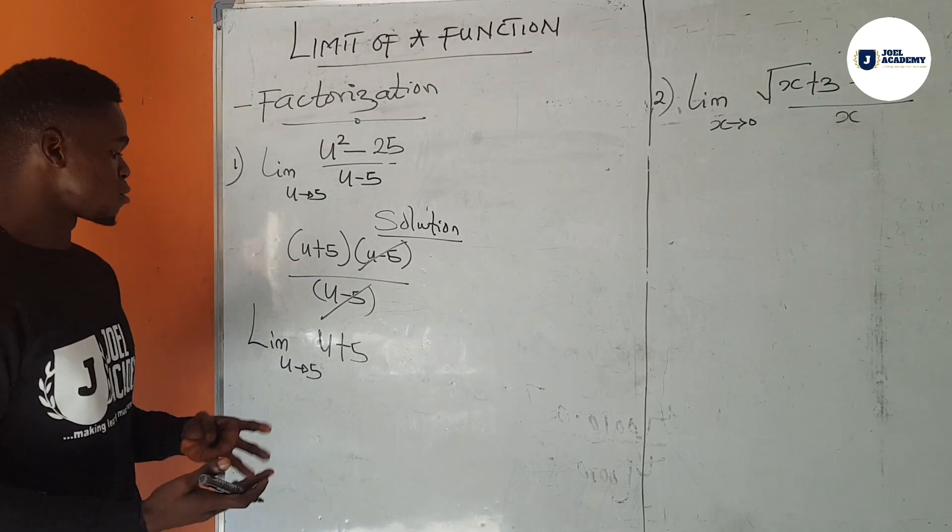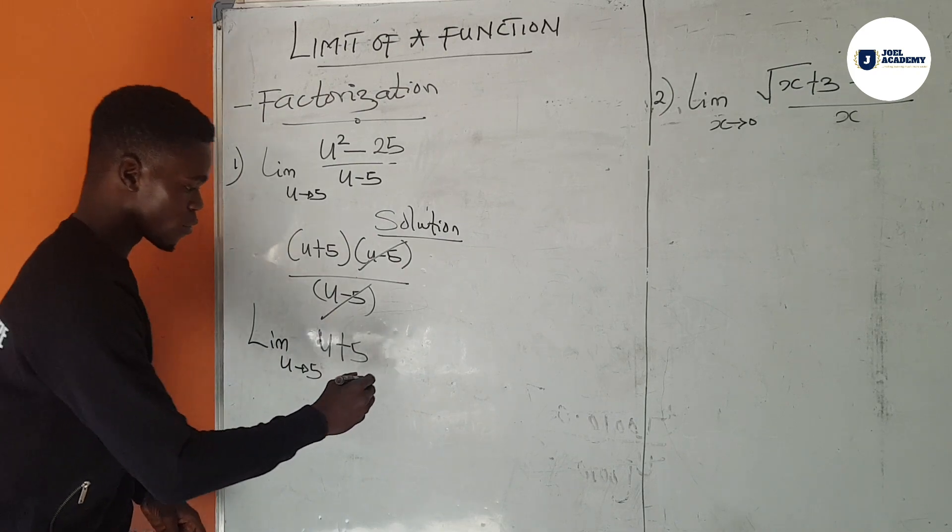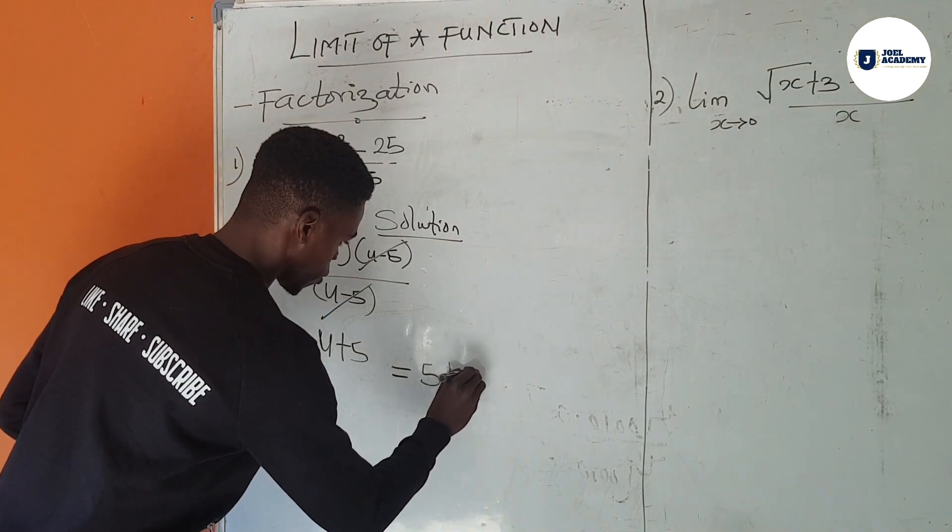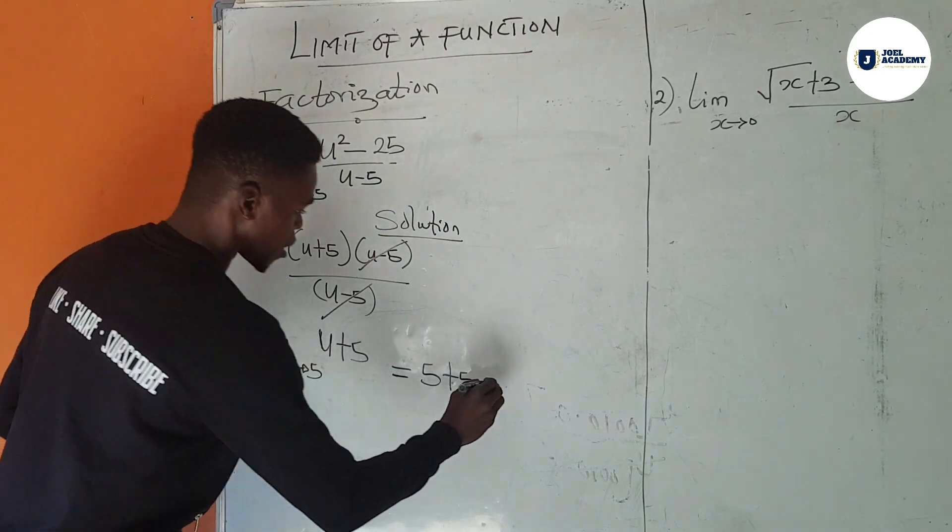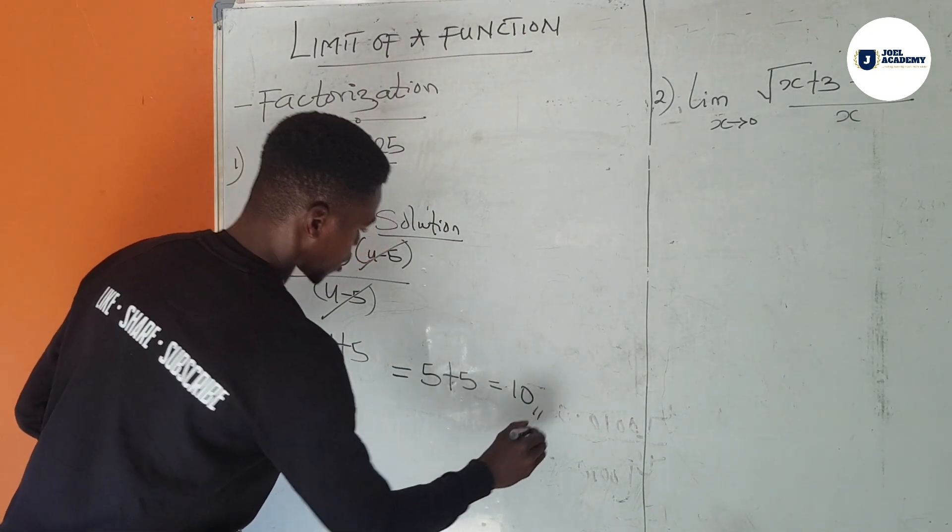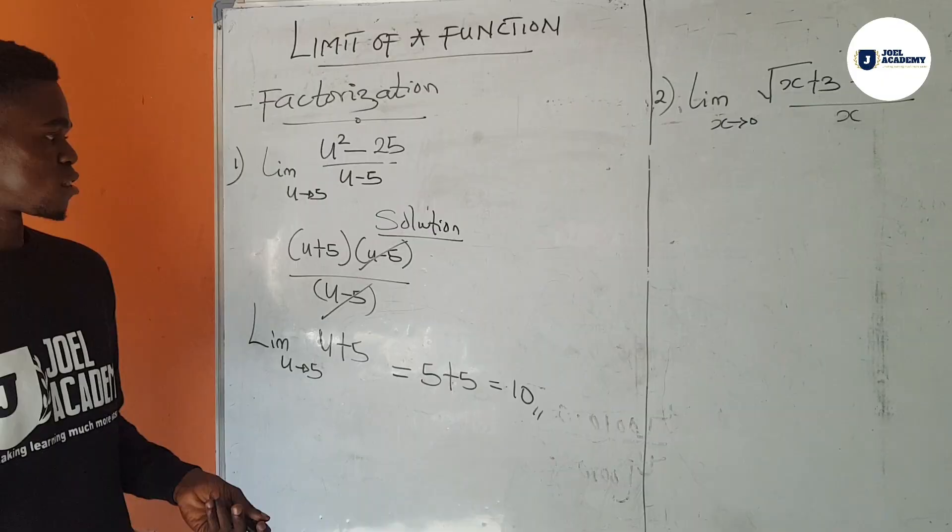Now we can go back to direct substitution. Putting in 5, we end up having 5 plus 5, and that will give us 10 as our answer. I guess that's quite simple. Now moving on to the second question.